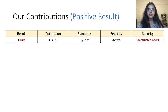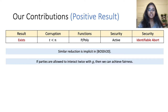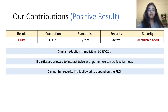As for our positive result, we show that an elementary reduction with identifiable abort does exist in this setting. A similar reduction is also implicit in a recent concurrent work. We additionally show that it is possible to achieve fairness if the parties are allowed to interact more than once with the oracle G, and moreover if G is allowed to depend on the PRG, then it is also possible to get full security. In fact, any passively secure elementary reduction can be transformed into an actively secure one which is non-interactive but depends on the PRG in a non-black-box way.